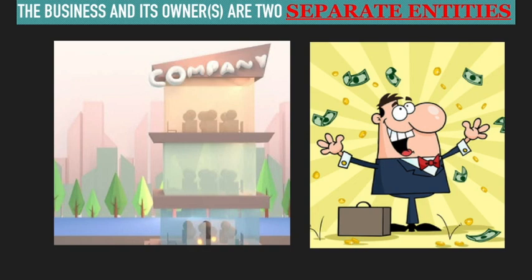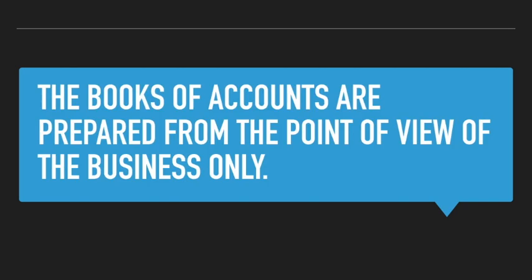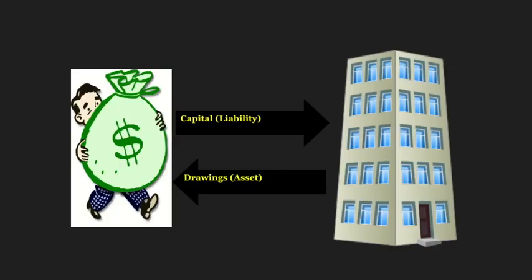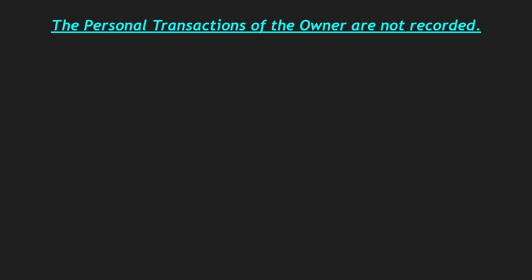It means that business books of accounts are prepared from the point of view of the business only, not from the point of view of the individual, because they are separate entities. If the owner invests something in the business, that is capital for the organization. If the owner withdraws something, that is drawings for the organization.